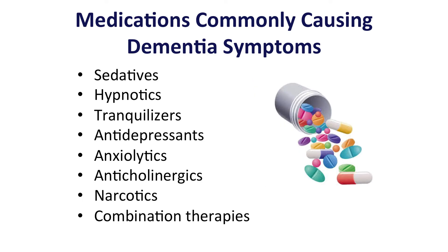Medications commonly cause changes in cognition, and it is very important in this geriatric population to keep this in mind, as the long list of medications that many patients are prescribed or take over the counter may be contributing to changes in their thinking. Medications that should be reviewed include sedatives, hypnotics, tranquilizers, antidepressants, anxiolytics, anticholinergic medications, narcotics, and any combinations.